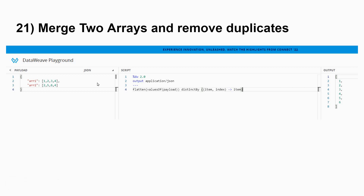Hello everyone, my name is Vijay and I work as a Senior Lead Engineer. In this session I'll be continuing with DataWeave interview questions. I've already created two videos on the same topic uploaded to my channel. In this video I'm going ahead with the 21st question: merge two arrays and remove duplicates. This is an object which has values as arrays, so let's see the demo.